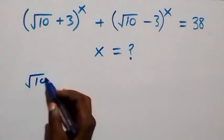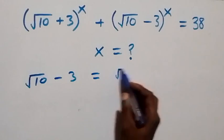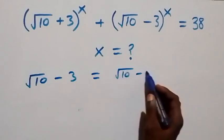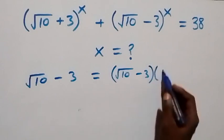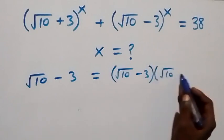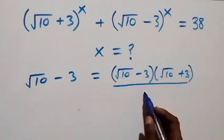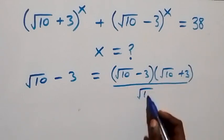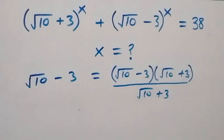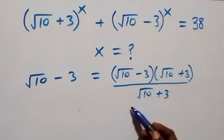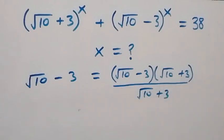Root 10 minus 3 can also be written as (root 10 minus 3) multiplied by (root 10 plus 3), and also divided by (root 10 plus 3). From here, when root 10 plus 3 cancel each other, we are still going to be left with root 10 minus 3.